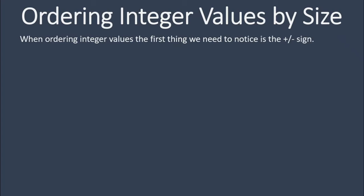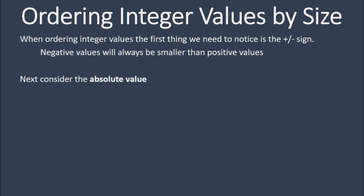Ordering integer values by size is when we're ordering values which could be positive or negative, from either smallest to biggest or biggest to smallest. The first thing you need to notice is the sign. That's the biggest mistake people make all the way up through A level — they don't look carefully at the sign. Is it a positive sign or a negative sign? Negative values will always be smaller than positive values, regardless of the absolute value. Absolute value is a number's distance from 0. For example, negative 2 and positive 2 have the same absolute value — they're both 2 away from 0 on opposite sides.